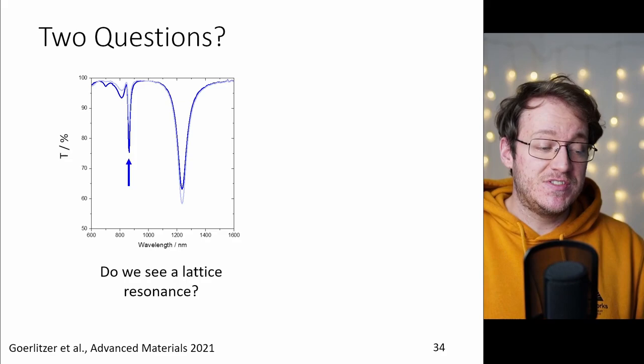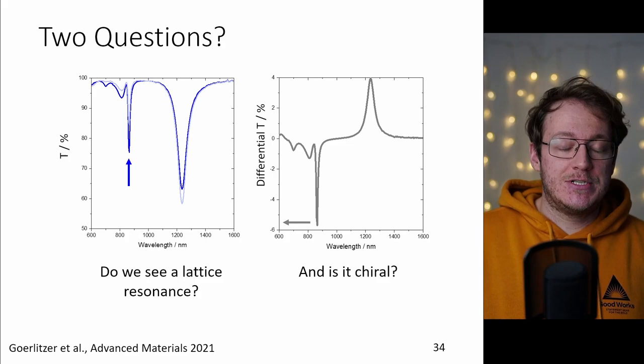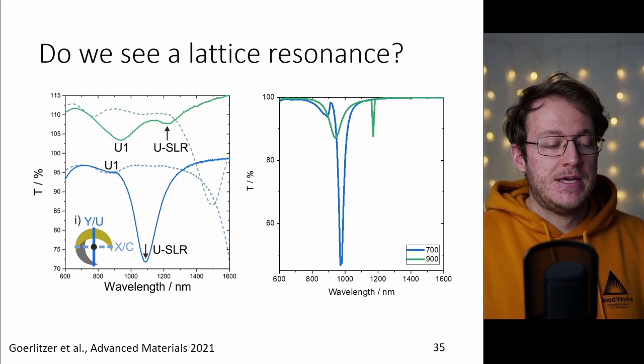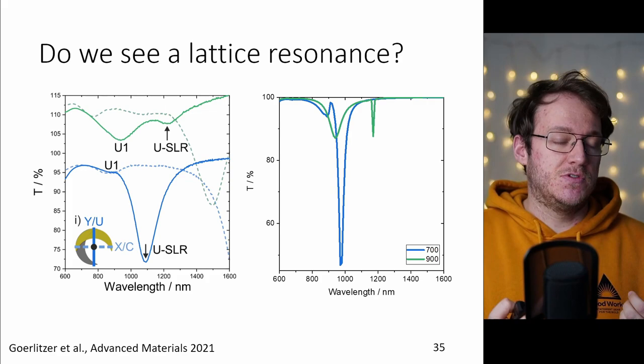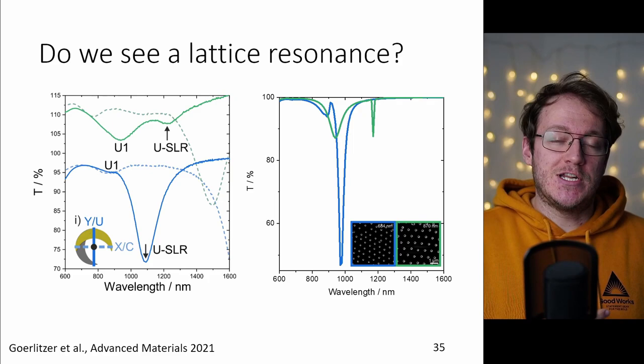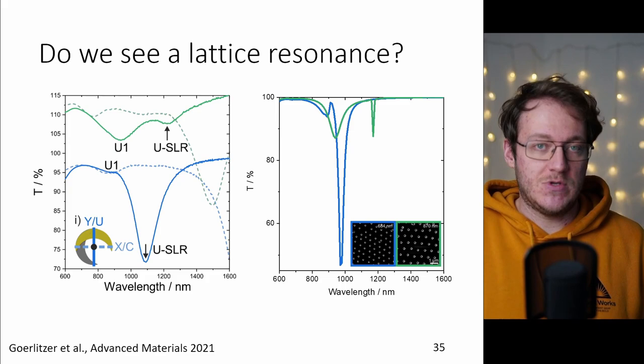Now there's two questions coming. First of all do we see the lattice resonance in the experiment as well and then of course is it indeed a chiral surface lattice resonance? I just picked out two examples which are roughly 700 and 900 nanometers, on the right side you see the simulation and on the left side you see the experiment. Indeed we see what we would expect so we see the surface lattice resonance which is a bit sharper than the normal plasmonic resonance we see for the crescent and if we go from 700 to roughly 900 nanometers we also see that the surface lattice resonance is also traveling towards the longer wavelength. So indeed we are having a lattice resonance.